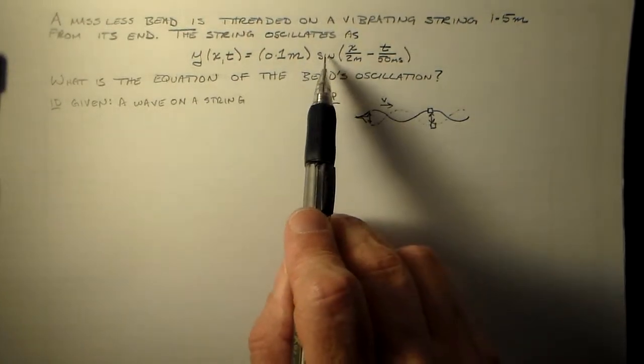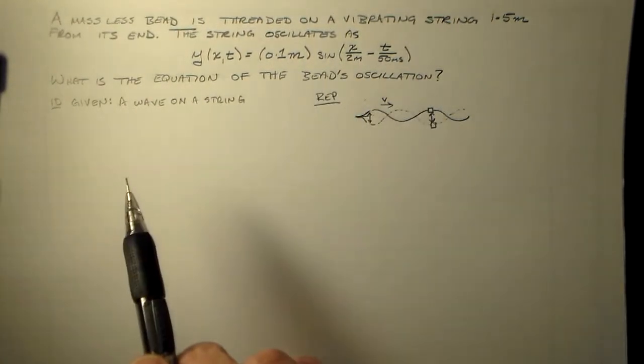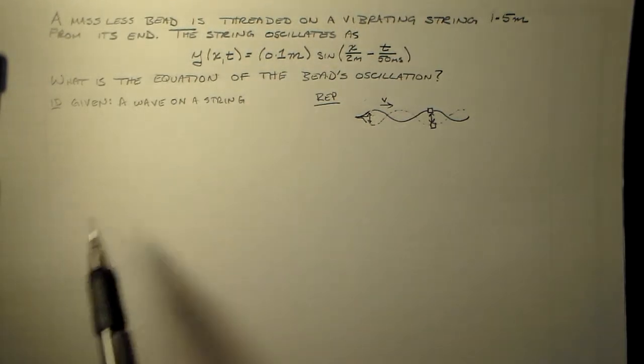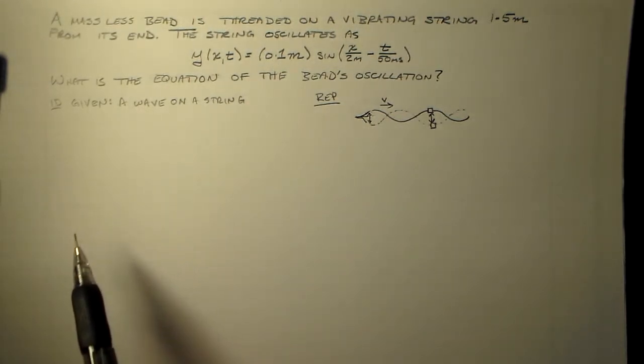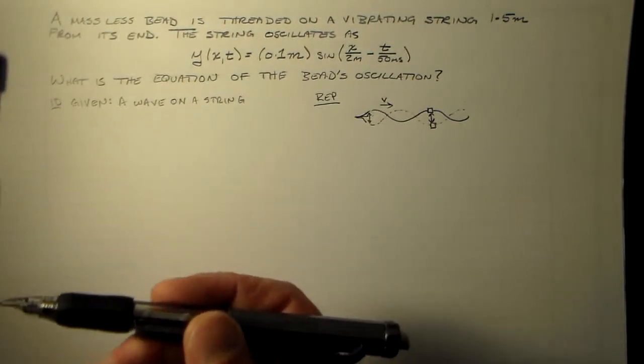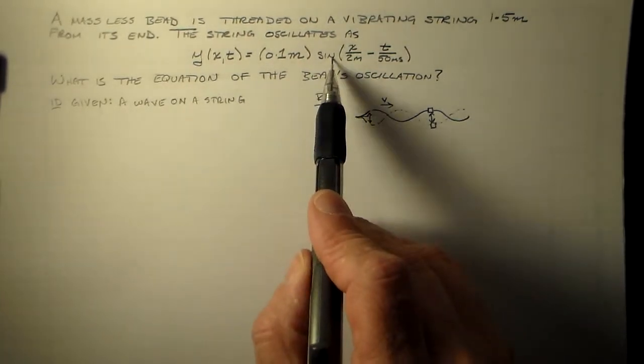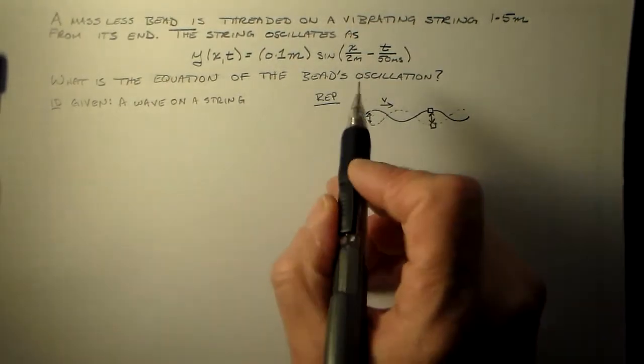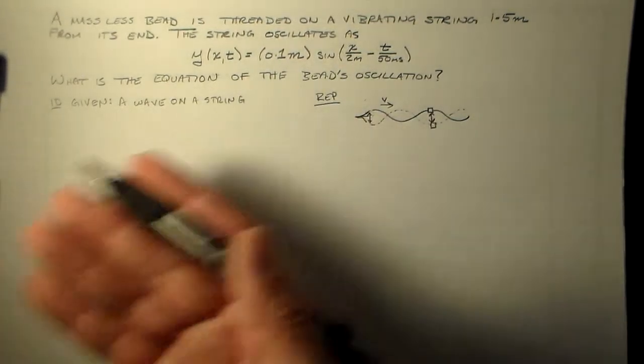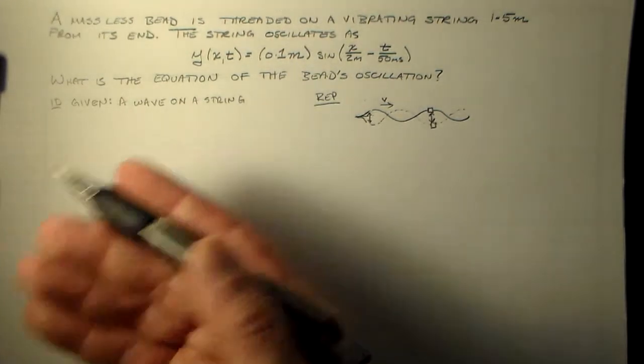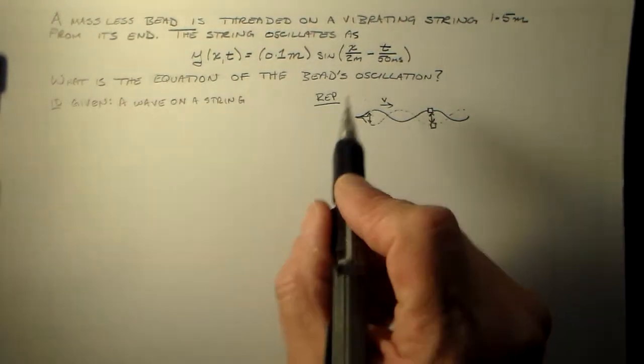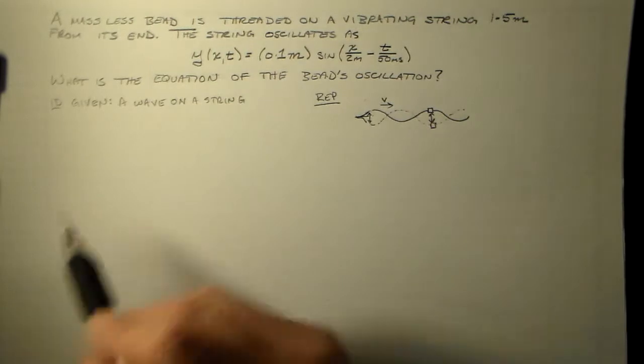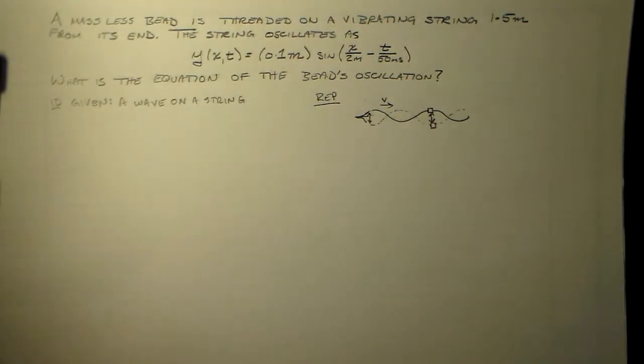You'll also notice that at some point he has just sine of x in one of the problems in the book. And that's just wrong, because sine only takes a dimensionless argument. So it's impossible to have sine of one meter. You can't do that. You can have sine of one, you can have sine of 200, but you can't have sine of one meter or 70 seconds or anything like that.